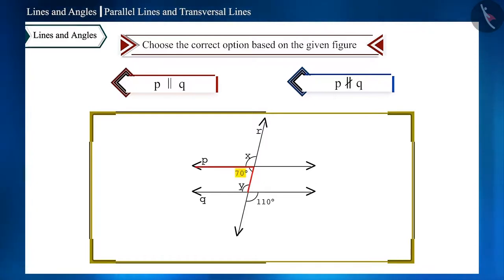The measure of this angle is 70 degrees and the measure of this angle is 110 degrees. These two angles are vertically opposite angles, so they will be 110 degrees. And these two angles form a linear pair, so we can write them like this.